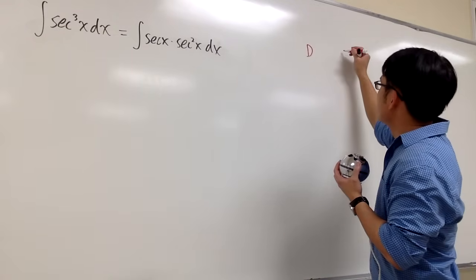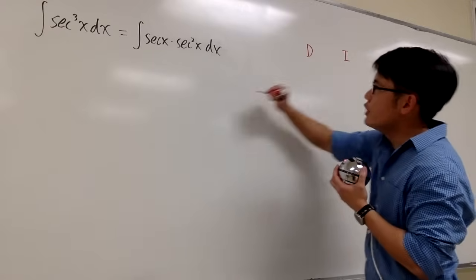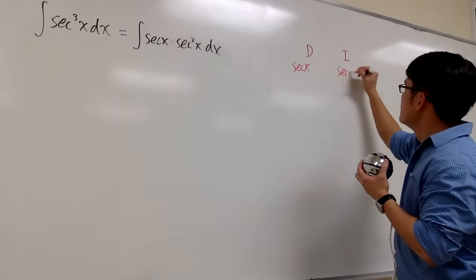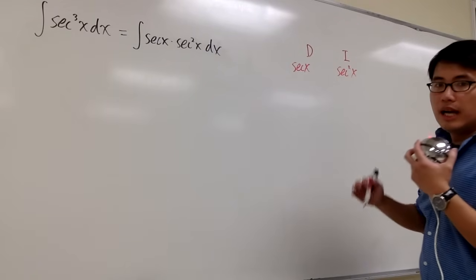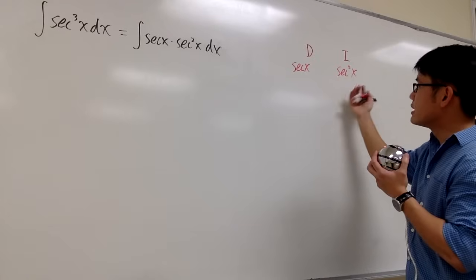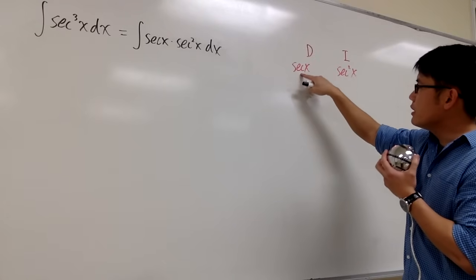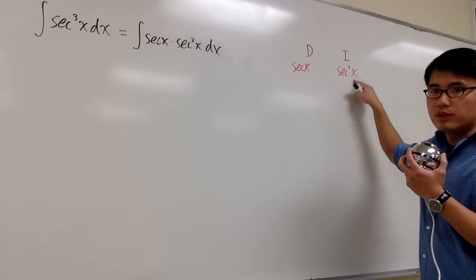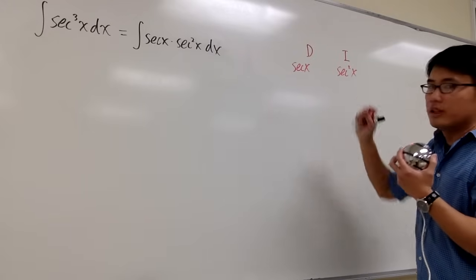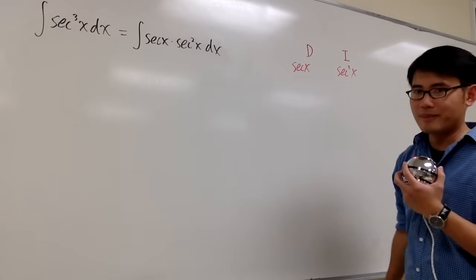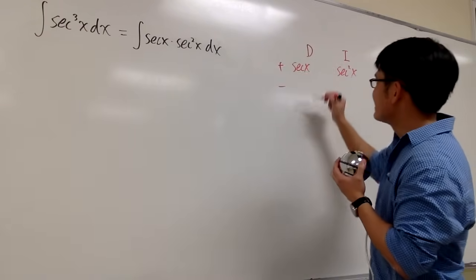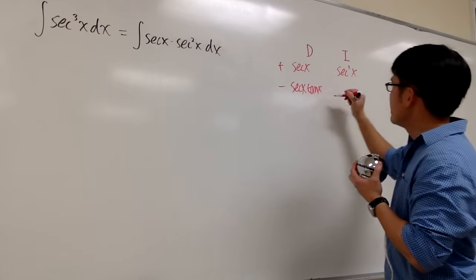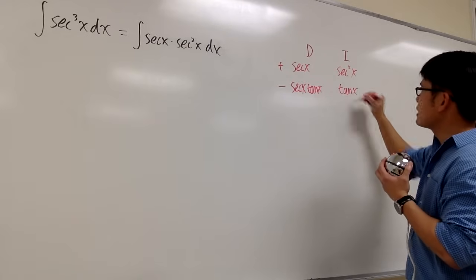Let me do the BI method on the side. I'm going to differentiate secant x and integrate secant squared x. The choice is this because it's easy to differentiate secant x and also easy to integrate secant squared x. If you switch, then we're going to have a harder time. Let's put a plus-minus. Differentiating secant x gives us secant x tangent x. Integrating secant squared gives us tangent x.